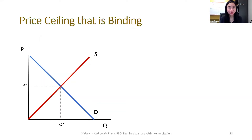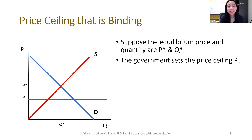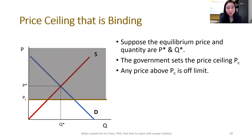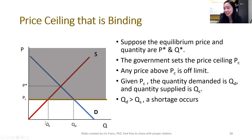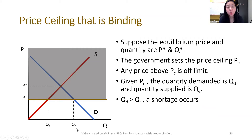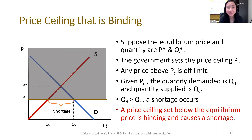Now suppose we have a price ceiling that is below our equilibrium price. It is going to affect us because you're not allowed to sell at price P-star anymore, so the price will be PC. Given price PC, your quantity supplied is here — you go to your supply curve and it tells you quantity supplied. You also go to your demand curve, and it tells you that your quantity demanded is higher. So quantity demanded is higher than quantity supplied, and therefore you have a shortage. A price ceiling set below equilibrium price is binding and it will create a shortage.